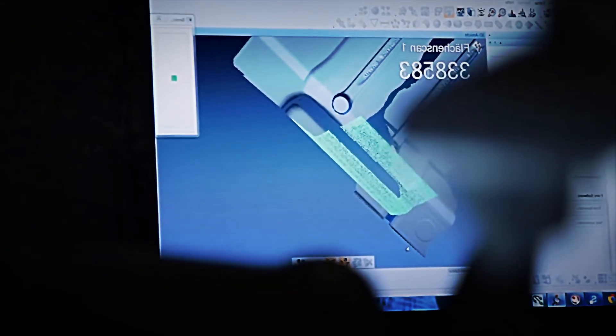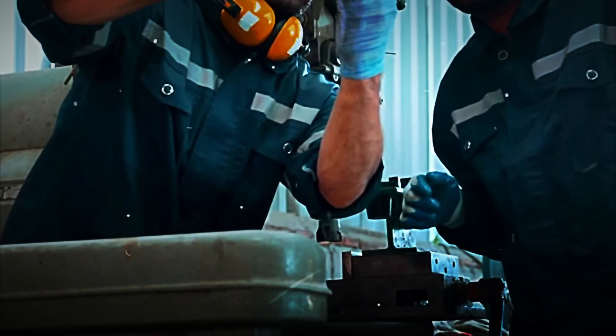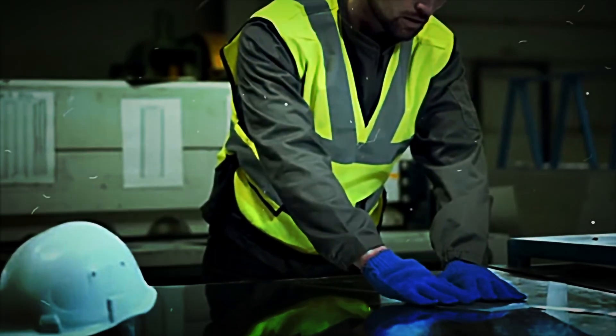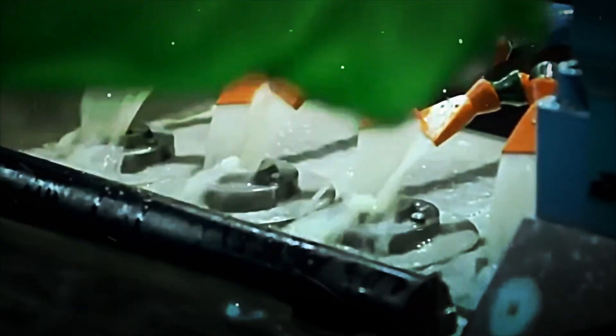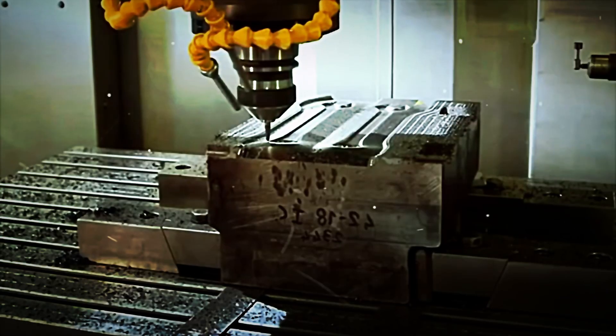CNC machining centers working at high speed precisely shape each critical area. First, the open end is formed, adjusting its angle, generally 15 degrees, and machining the teeth that will make firm contact with screws and nuts.